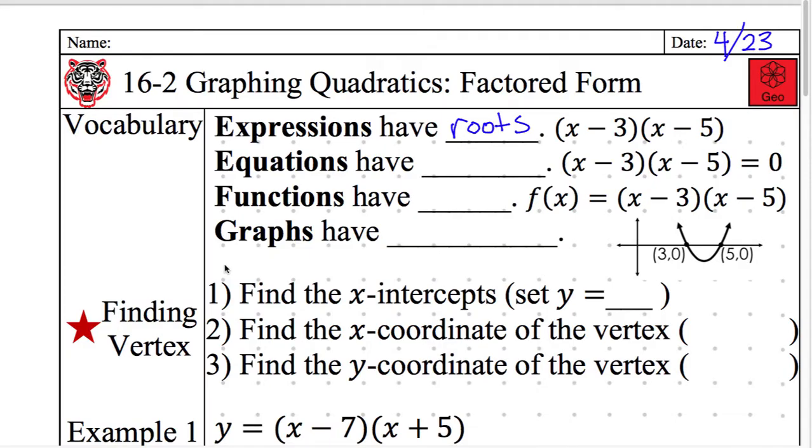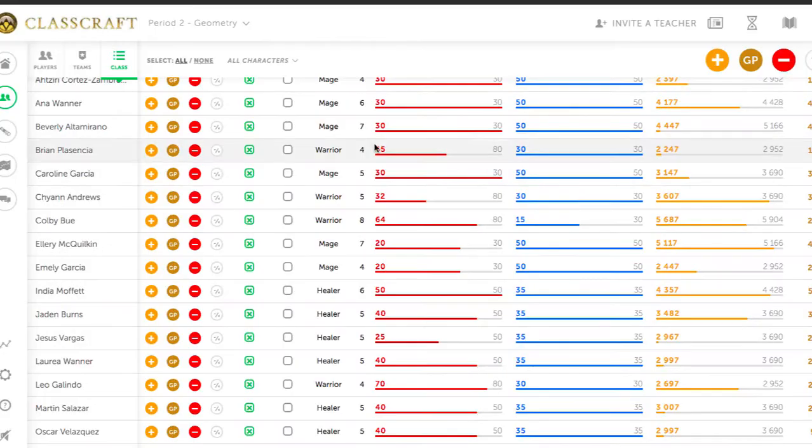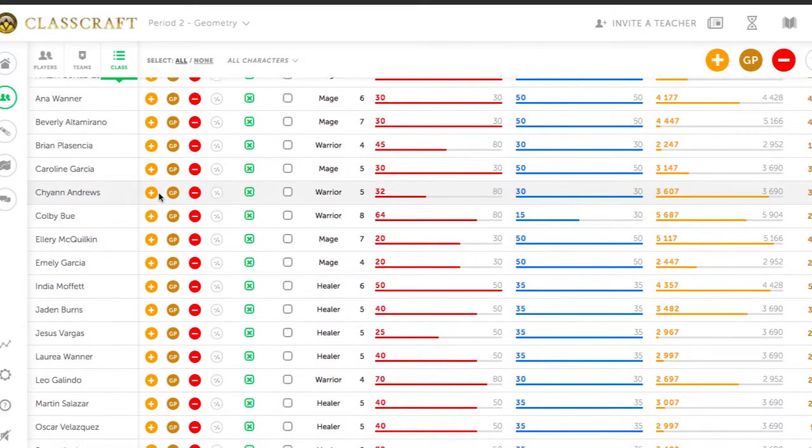Equations have what? Quiet raised hand. Easy, easy XP, Chewy. Solutions, write it down. So this word roots is basically the same thing as solutions, just in a different context. So there's Chewy, there's Cheyenne, and coming back here to give Chewy his XP.